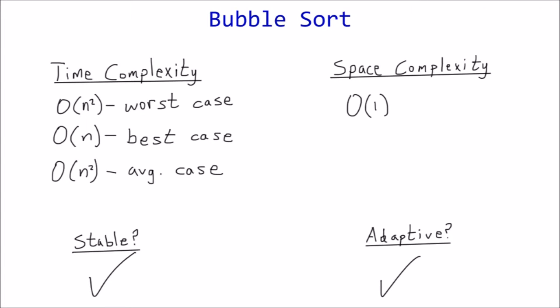In conclusion, bubble sort is not a very efficient sorting algorithm, particularly with large lists. Despite having a best case of order n comparisons, the increased amount of swaps make it the least appealing of all order n squared sorting algorithms, especially if the objects are big. Well, that does it for this tutorial. Thanks for watching.